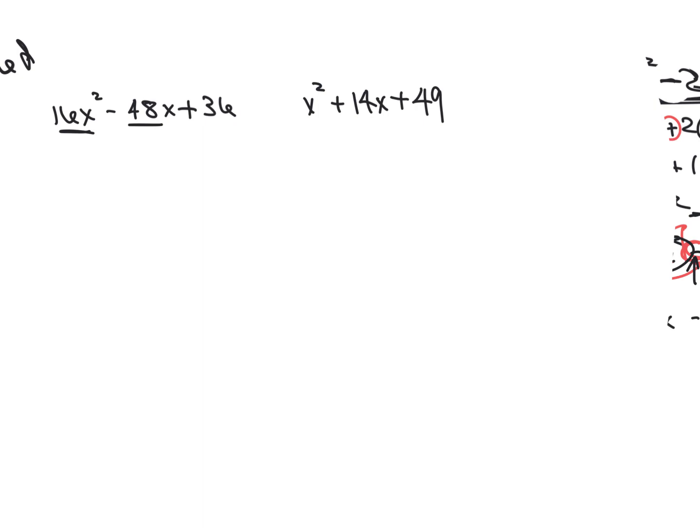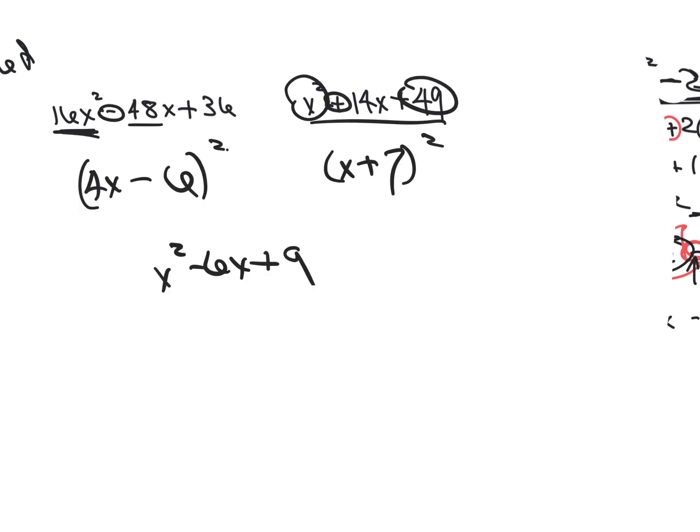Let's do one more. Is it a perfect square trinomial? So, 3x times 2 — yep, it is. So now I can solve it. Parenthesis, this sign goes here, 2 always goes there, square root of that, square root of that. And you just factored it.